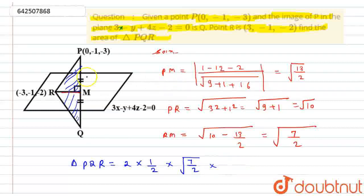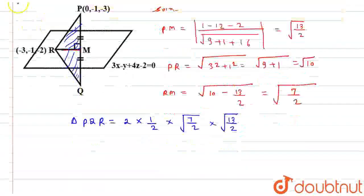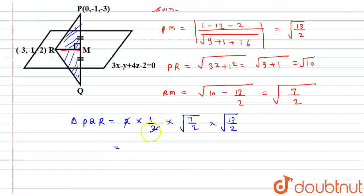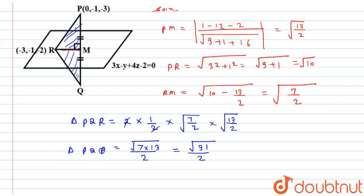So according to that, the length RM is under root of 7/2 as height, and base we have just calculated PM, that is under root of 13/2. So if I will solve this, 2 gets canceled, under root of 2 will be taken out as 2, and 7 multiply by 13 will be there. So 7 multiply by 13 will give me under root of 91/2, and this will be nothing but my required area for the triangle PQR. So this is the required solution for this particular question. I hope you like this solution, thank you.